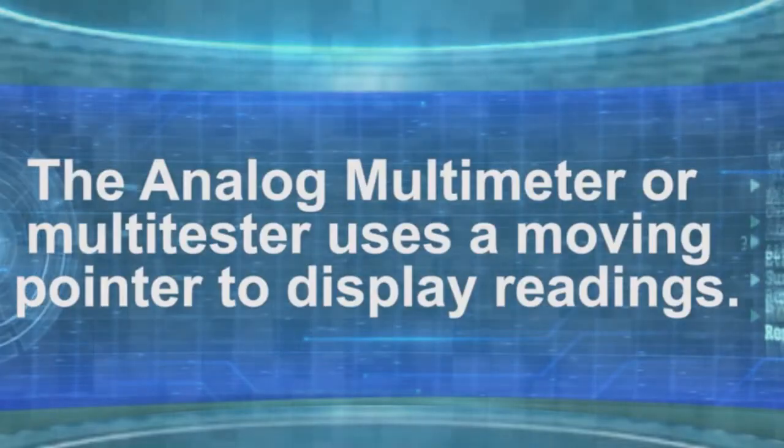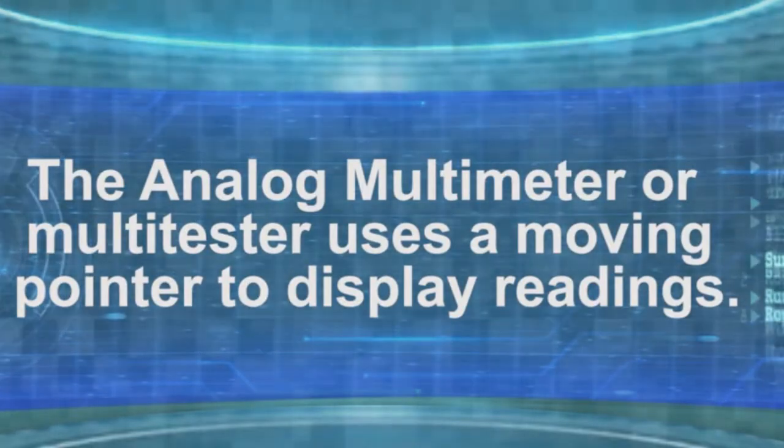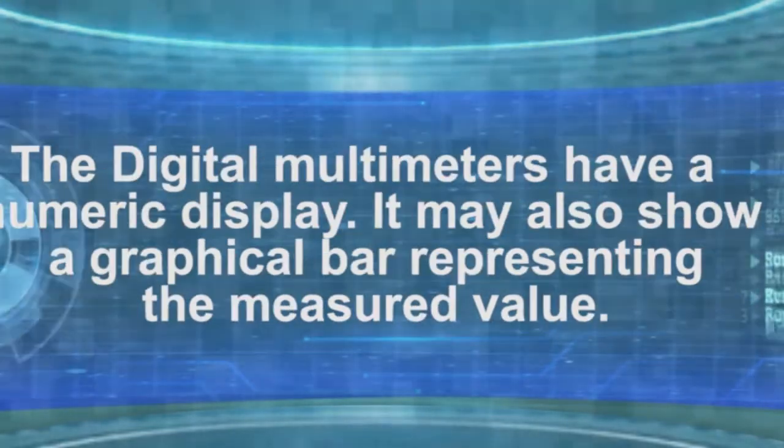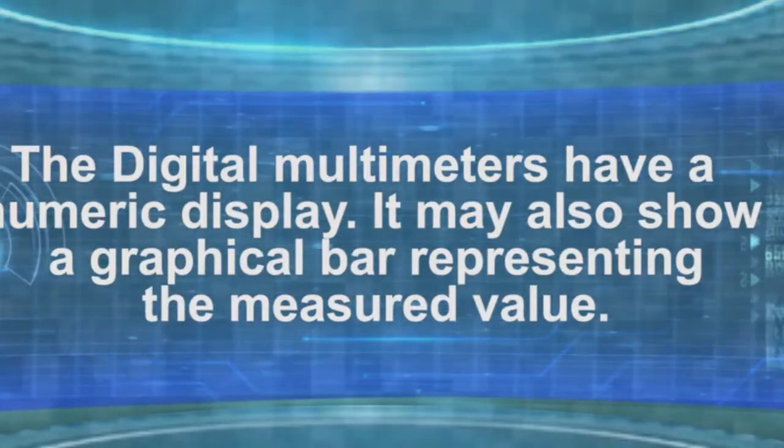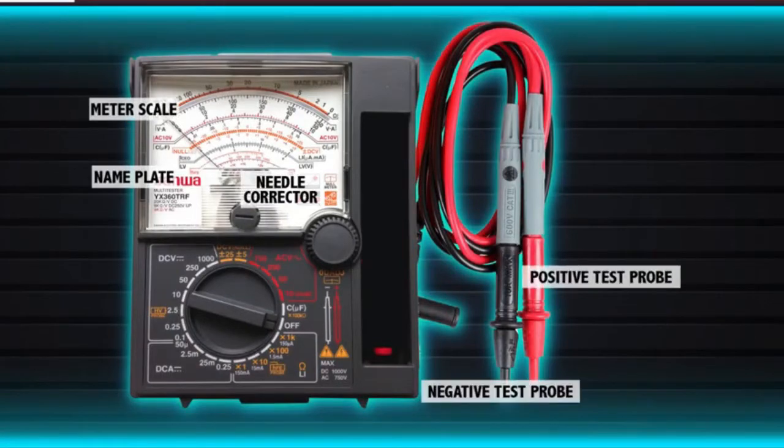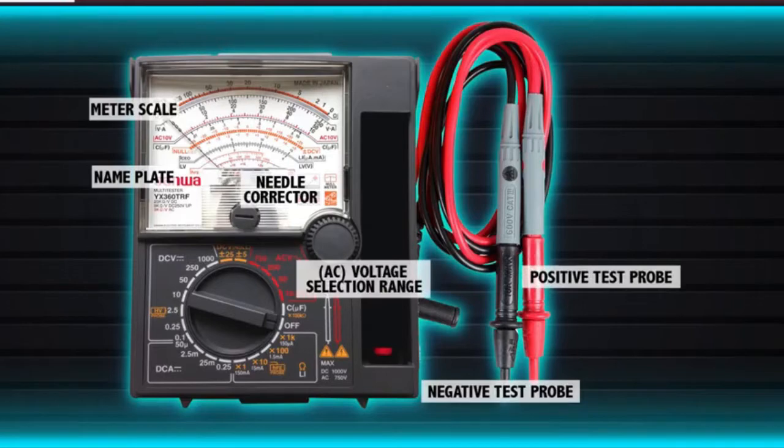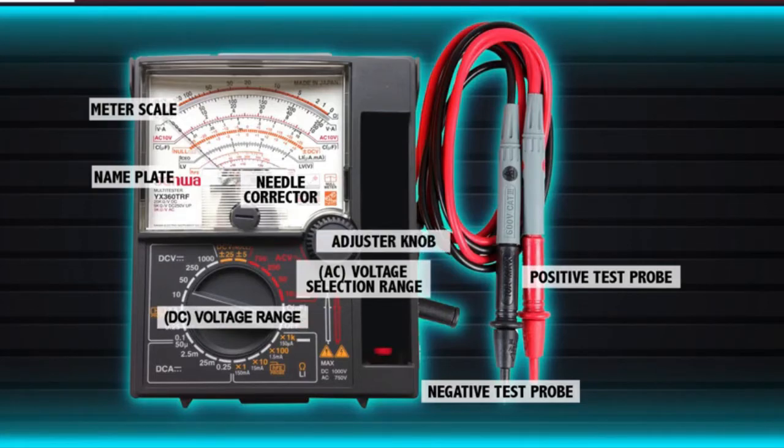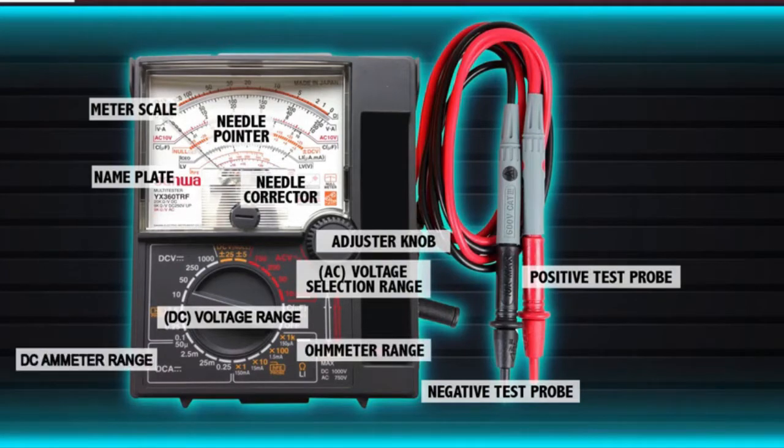Analog multitester or multimeter uses a moving pointer to display readings while the digital multimeter has a numeric display and may also show a graphical bar representing the measured value. They are the meter scale, nameplate, needle corrector, positive test probe, negative test probe, alternating current or AC voltage selection range, direct current or DC voltage selection range, resistance adjustment knob, needle pointer, ohmmeter range, and DC milliammeter range.